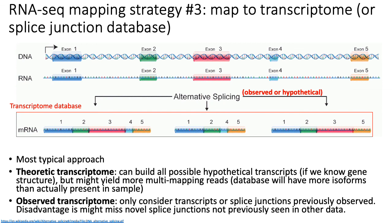Because the observed transcriptome database is much smaller, multi-mapping reads are less of a problem. However, the disadvantage of the observed transcriptome database is that you might miss novel splicing events that weren't previously seen in other data. There are advantages and disadvantages to both the theoretic and observed approaches, and both are used in practice.